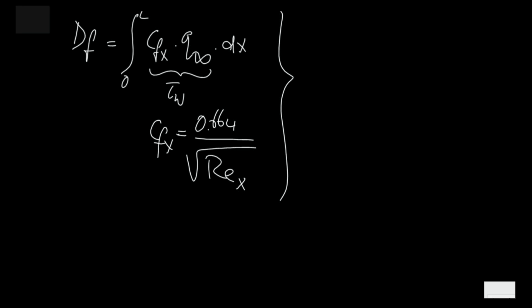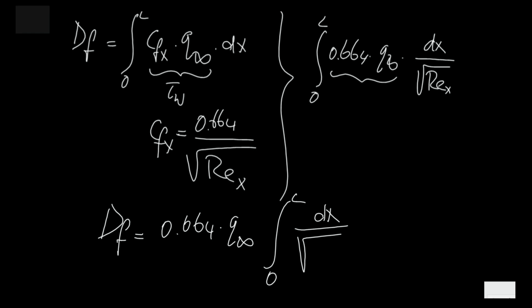We know from cfx that it is 0.664 divided by the square root of rex. Now, together this forms the integral from 0 to L of 0.664 times q infinity times dx divided by the square root of rex. Now, rex has a component of x, so we can write here dx divided by the square root of x, but then we have to divide this by the square root of rho times v infinity divided by the dynamic viscosity.